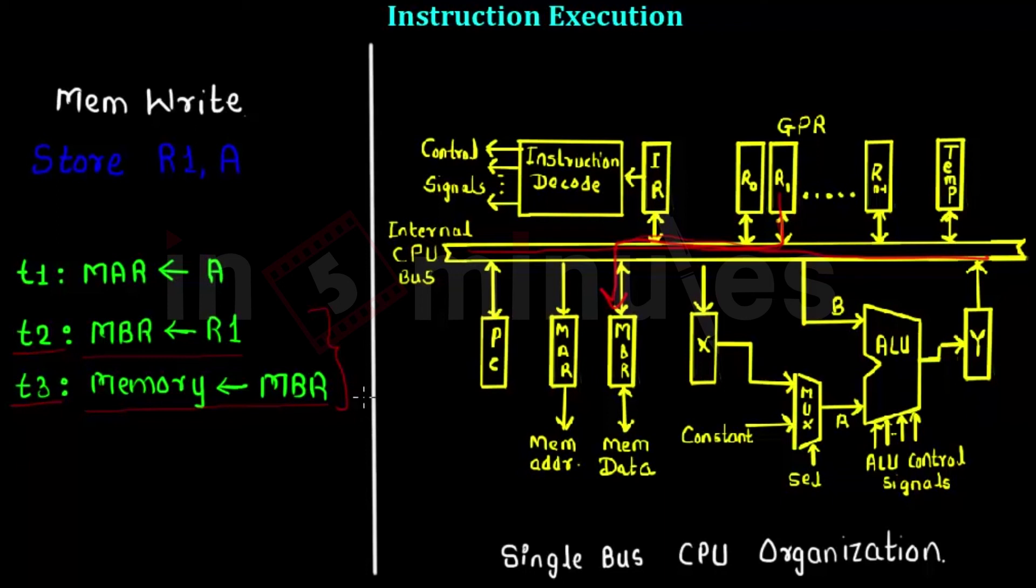So while performing two operations inside the same t-state, we have to take care that there is no data conflict present on the internal CPU bus, because only one data can be present at a time on the CPU bus.